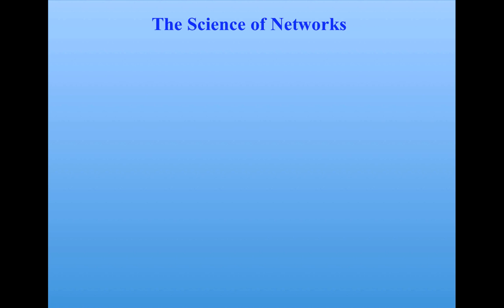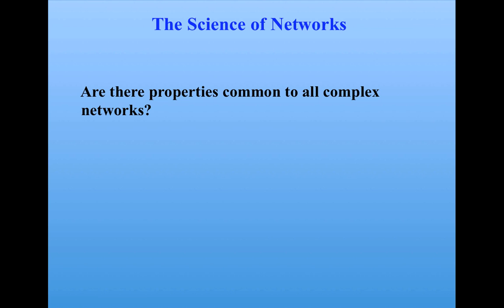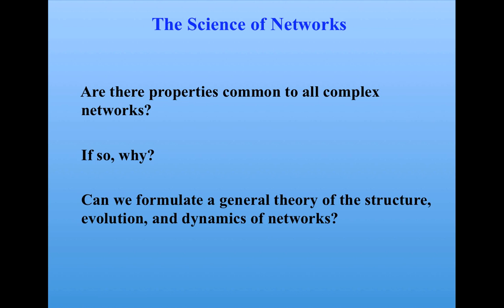Within the last couple of decades, people have started looking at a very general science of networks, in which they ask: are there properties that are common to all the different complex networks that we see? And if so, why have such properties arisen? And finally, would it be possible to formulate a general theory of networks — that is, to understand their structure, evolution, and dynamics across all the different manifestations of networks? These are all open questions. We will, in this unit, look briefly at how scientists are trying to answer such questions.